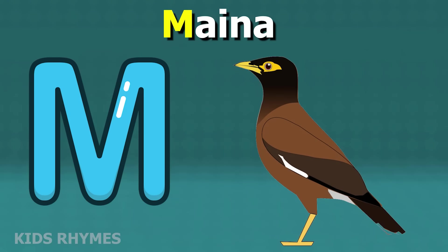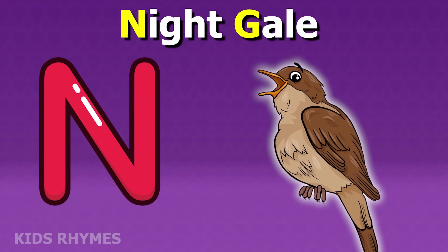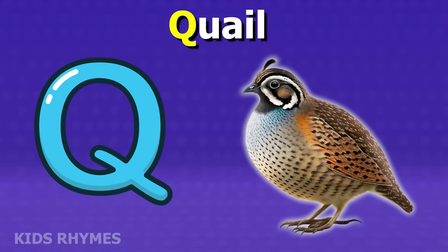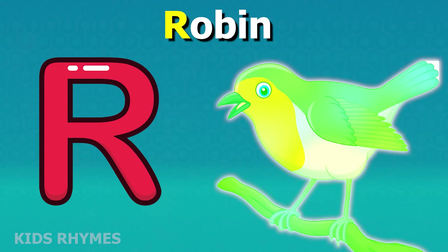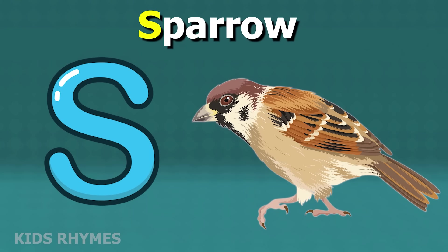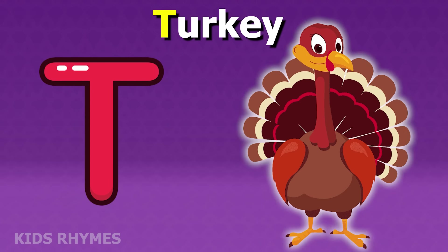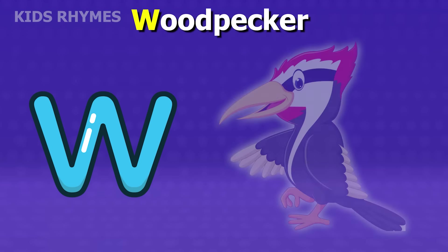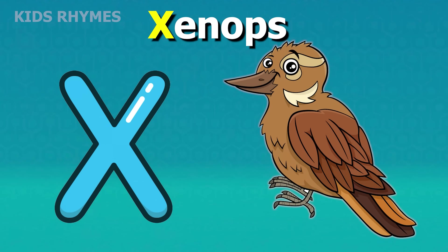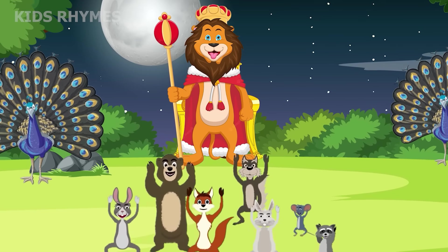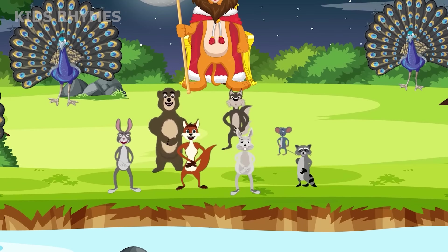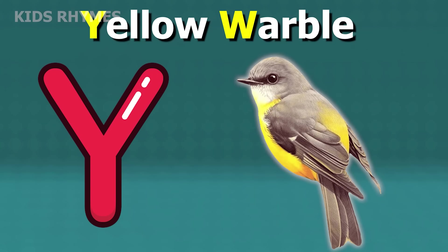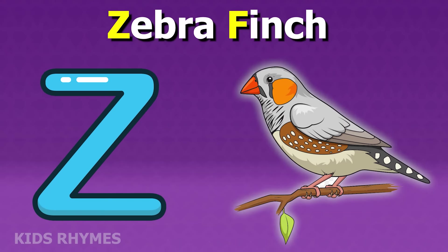M for myna, N for nightingale, O for owl, P for parrot, Q for quail, R for robin, S for sparrow, T for turkey, U for owl, V for vulture, W for woodpecker, X for xenops, Y for yellow warbler, Z for zebra finch.